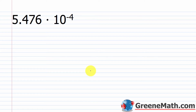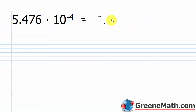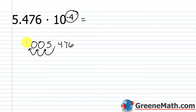For 5.476 times 10 to the power of negative 4, I don't need to rewrite it as a fraction each time. A negative exponent on 10 just means I move the decimal point to the left — four places in this case. So 5.476 moves four places to the left, giving 0.0005476.